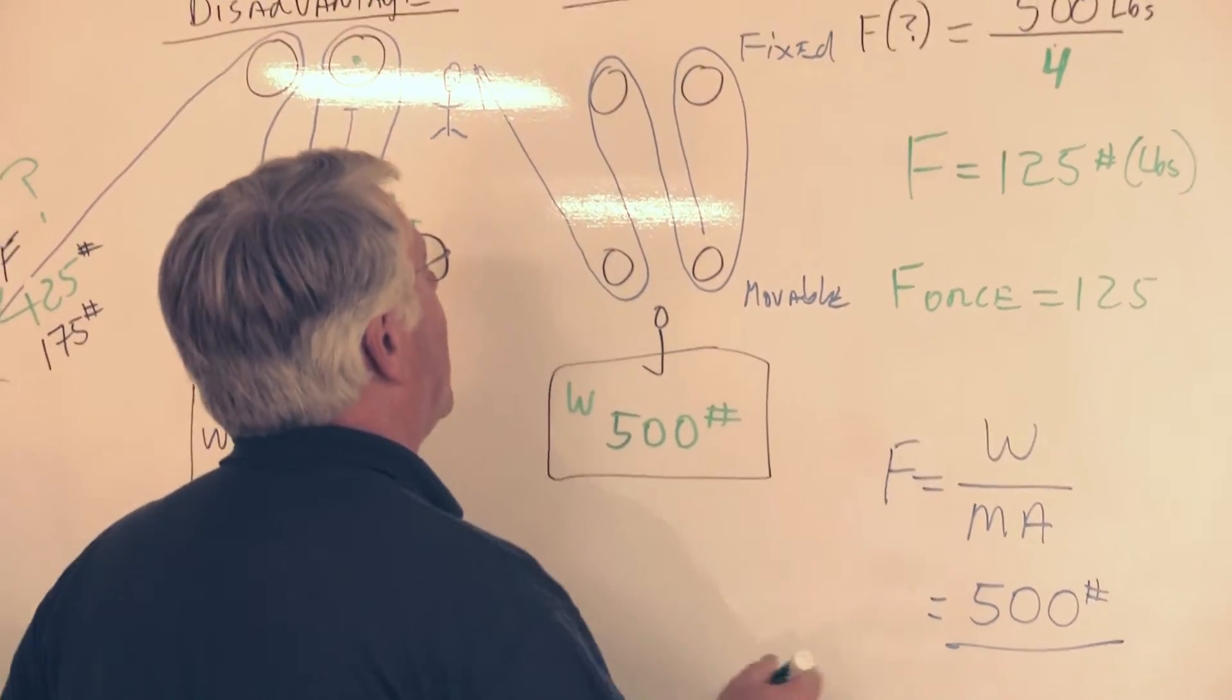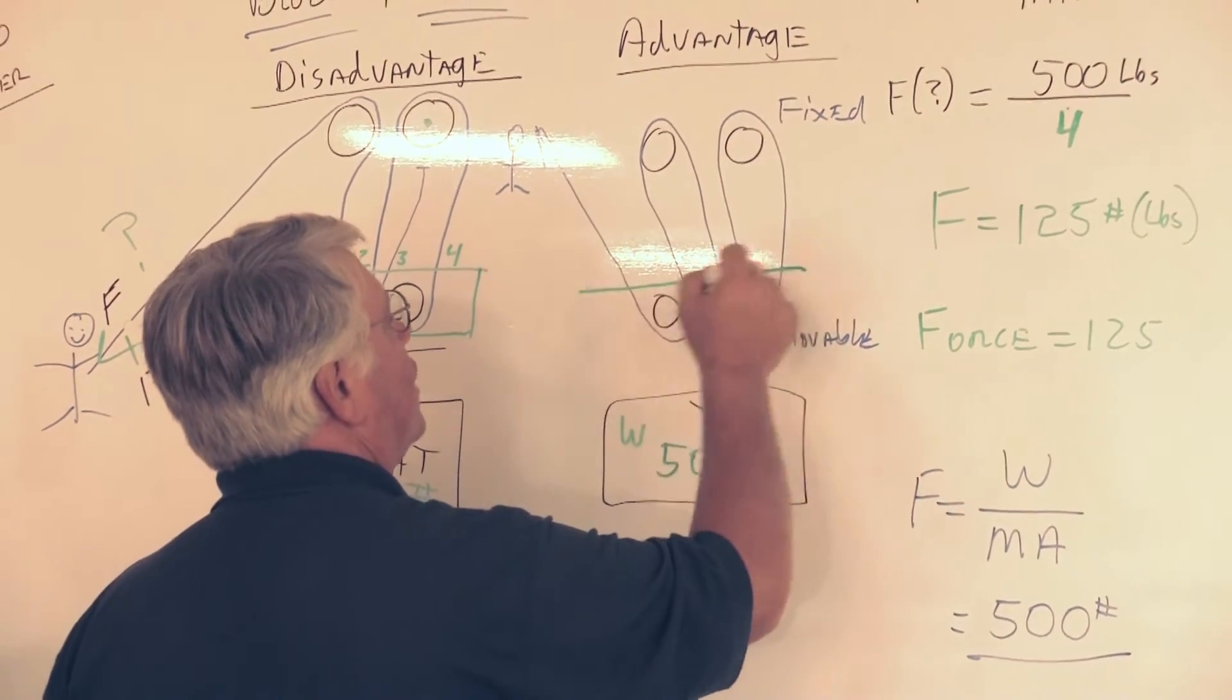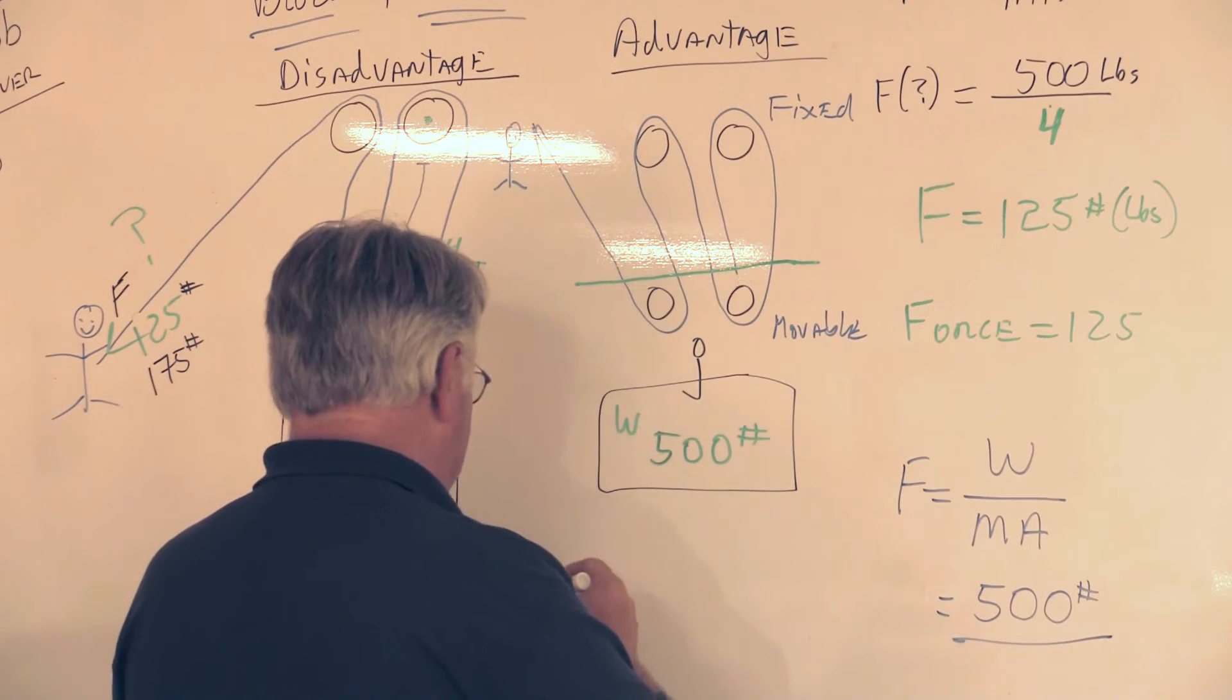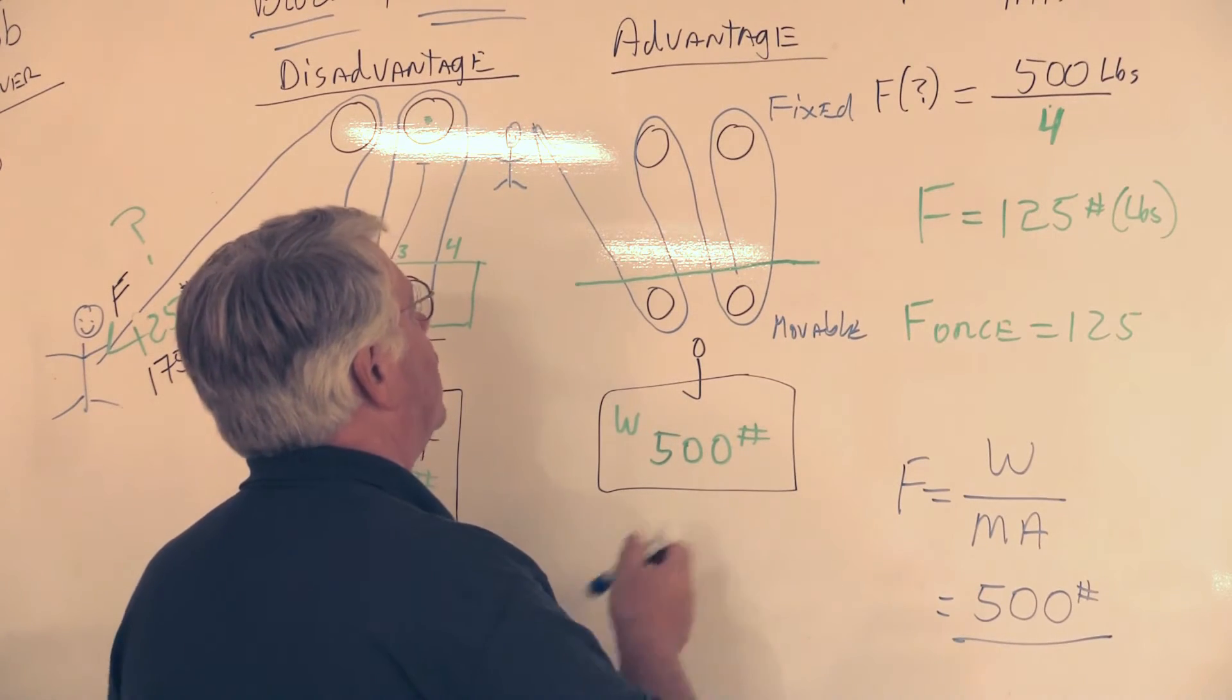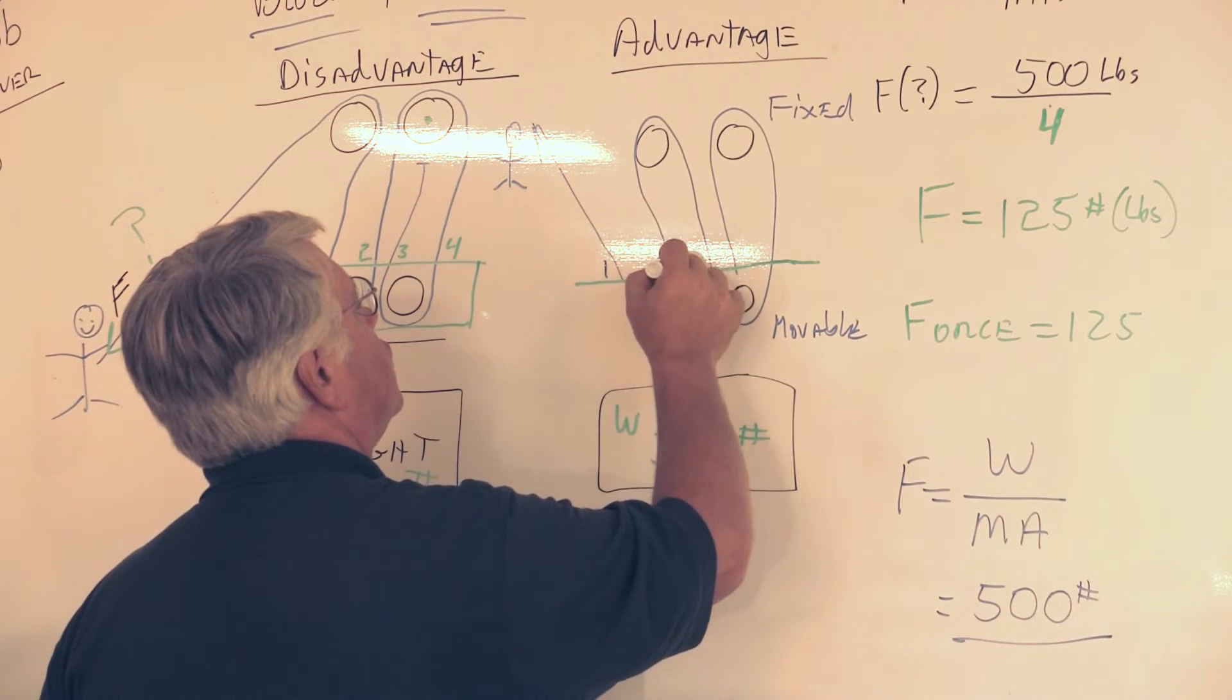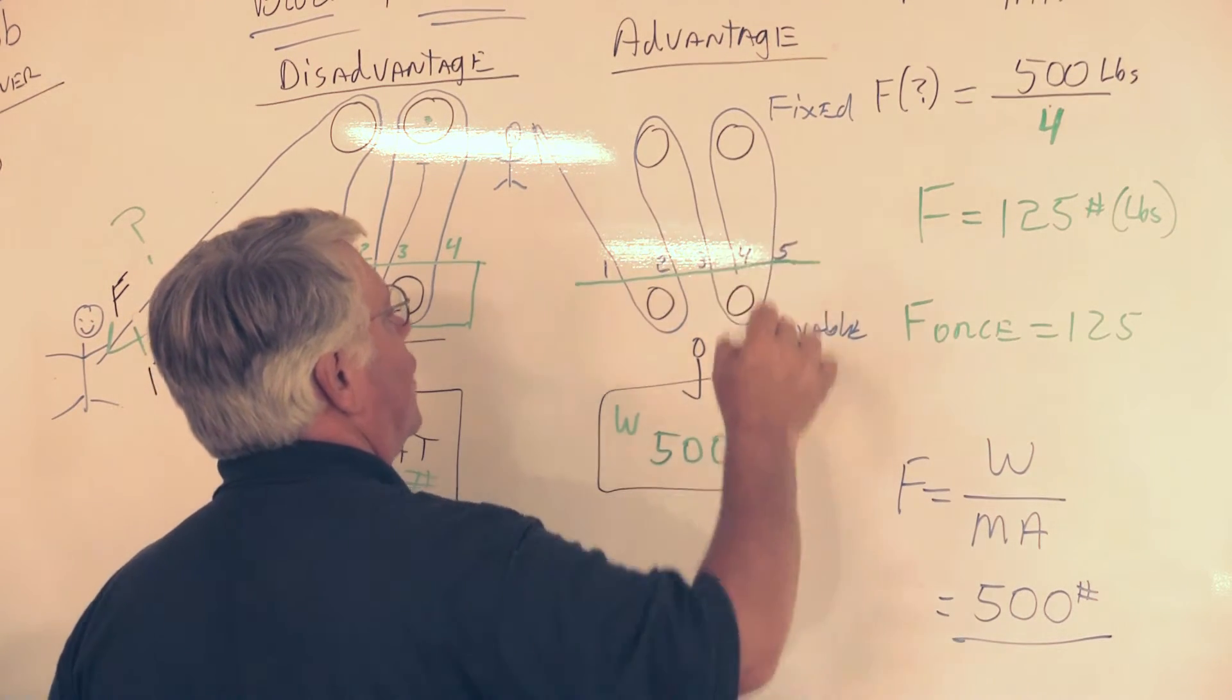If you remember, how do we count what the mechanical advantage is? The mechanical advantage is always counted by the number of falls at the movable block. So if I go back and count my falls, I have one, two, three, four, five.